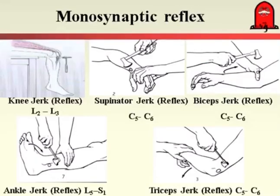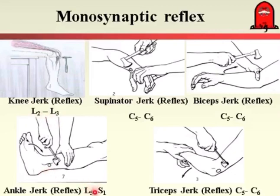Other examples of monosynaptic reflexes: the bicep jerk occurs through the fifth and sixth cervical segment; the supinator jerk at C5 and C6; the knee jerk at L2 and L3; the ankle jerk at S1 (sacrum 1); and the tricep jerk occurs through C6 and C7 segment of the spinal cord.